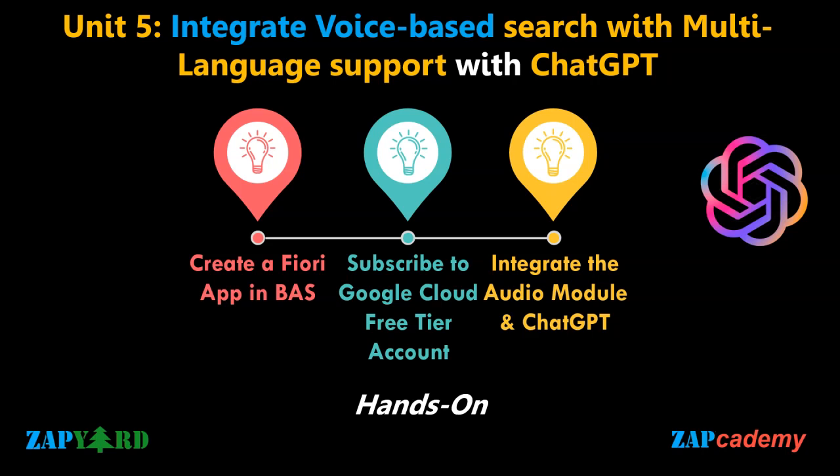Once the audio is converted to English text, we will integrate ChatGPT into our application. ChatGPT's advanced natural language processing capability will analyze the text query, understand its context, and generate accurate responses tailored to the user's needs. To ensure a seamless user experience, we will convert the generated response back from English to the original language, leveraging appropriate language translation services and audio playback capabilities to deliver the response in the user's preferred language. By the end of this unit, you will have the skills to develop a powerful Fiori application capable of capturing and processing multilingual voice queries, witnessing first-hand integration of cutting-edge technologies such as Google Cloud Transcriber and ChatGPT.